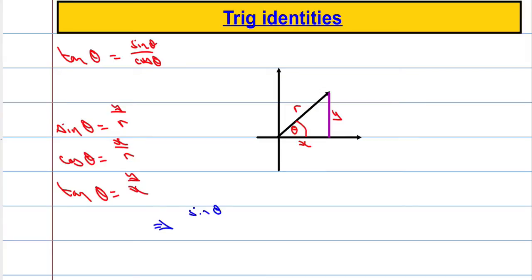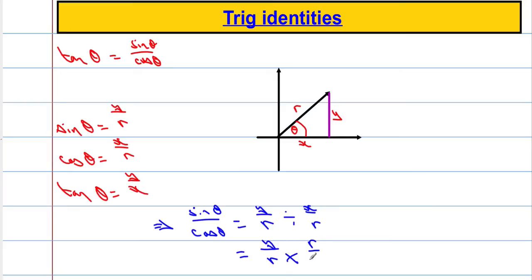Let's see what happens if we do sine of theta divided by cosine of theta. Sine of theta over cosine of theta is going to equal y over r divided by x over r. When we divide fractions we flip the second one and multiply, so the r's cancel out and we end up with y over x. And y over x is exactly what we had earlier — that's tan of theta. And that works for any values of theta provided that cosine of theta doesn't give us an answer of zero.